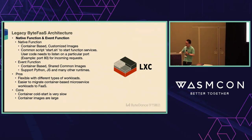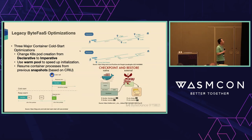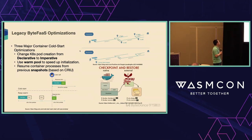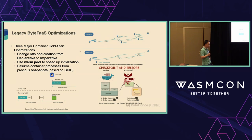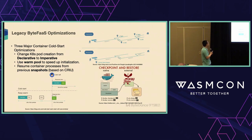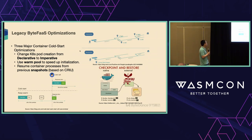For optimizations to the legacy workload, there are three major container cold-start optimizations. First, we changed Kubernetes pod creation from declarative to imperative, which avoids a lot of back-and-forth data updates and observations, saving time. Second, we use pod pooling to speed up initialization, which is also very common. Third — less common but adopted by many companies — is snapshotting: you snapshot container processes at a particular initial stage and later recover from that snapshot, so large containers can start up faster.